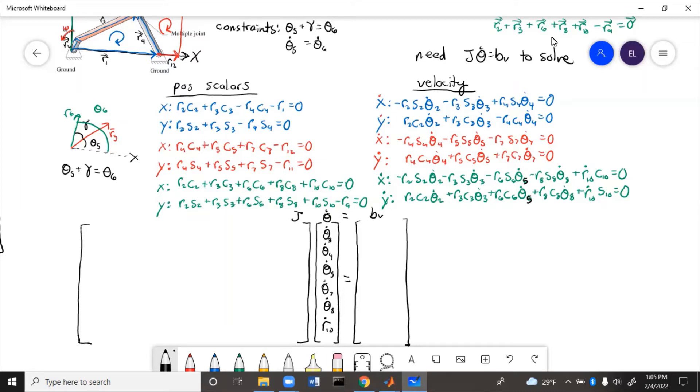So now what goes into the J matrix is going to be the coefficients of all of those. So we'll start with the blue loop, x and y. So coefficients from the x, we'll fill in that first row.